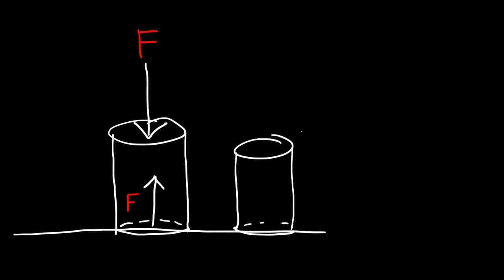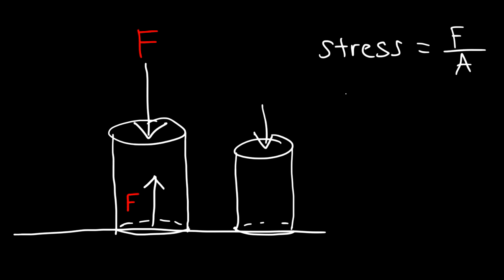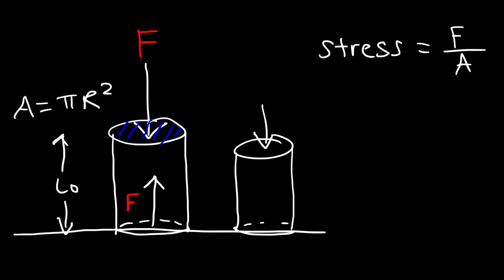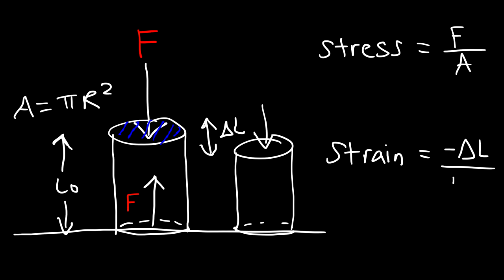Compressive stress is still force divided by area. For a circular column, the area is pi r squared. Delta L is the change in length — this time delta L is negative because the length of the object decreases. So the compressive strain of the object is negative delta L divided by L initial.